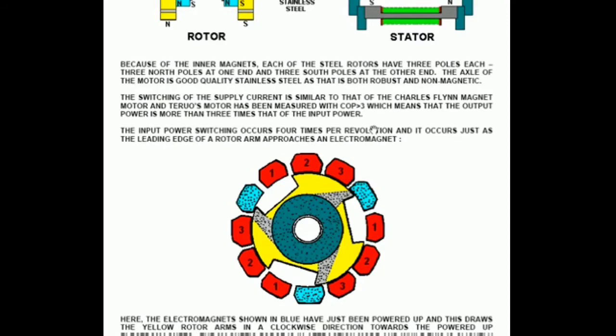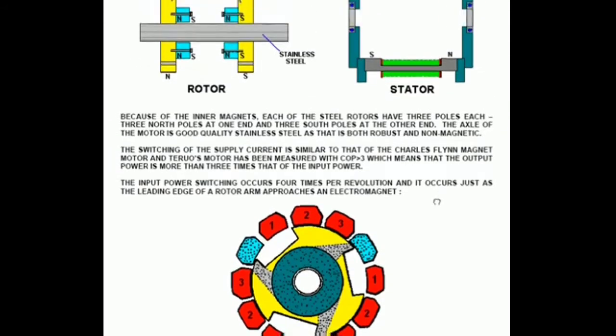The switching of the supply current is similar to that of the method used by Charles Flynn with his magnet motor. And Teru's motor has been measured with a coefficient of performance over three which means that the output power is more than three times that of the input power. The input power switching occurs four times per second or four times per revolution I should say and it occurs just as the leading edge of the rotor arm approaches an electromagnet.